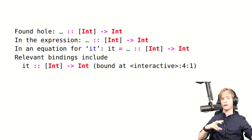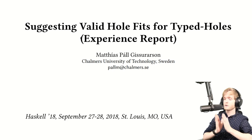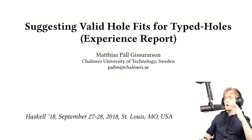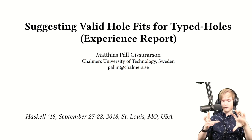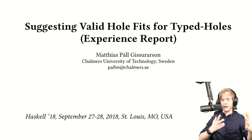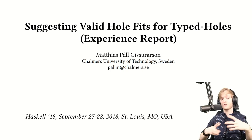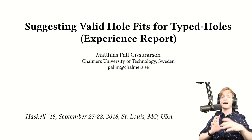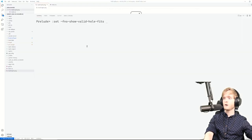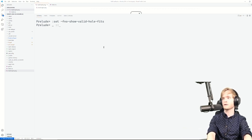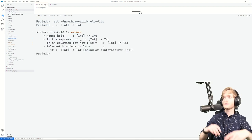I'll show more in a demo later, but my first paper, which came out in 2018 at the Haskell Symposium in St. Louis, was called 'Suggesting Valid Hole Fits for Typed Holes.' In this paper, instead of just displaying the inferred type and the environment, we do some additional work and try to figure out, based on the type and environment, what we can put in place of the hole. Here's a demo — first I'll turn off the hole fits to show you the original behavior. This is a hole with type 'list of integers to Int,' and this is the original output.